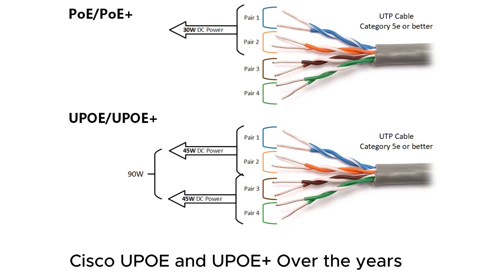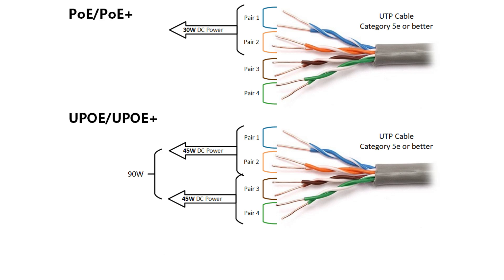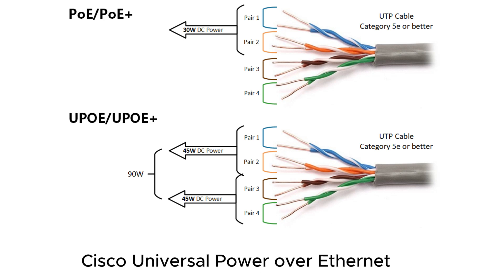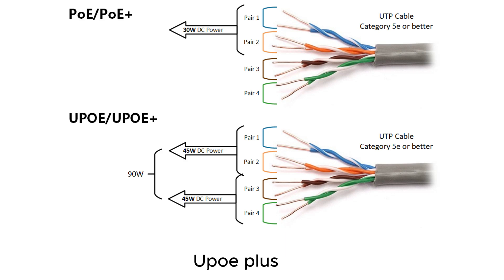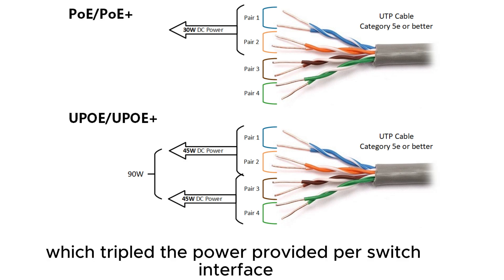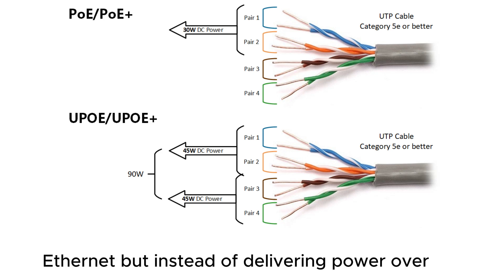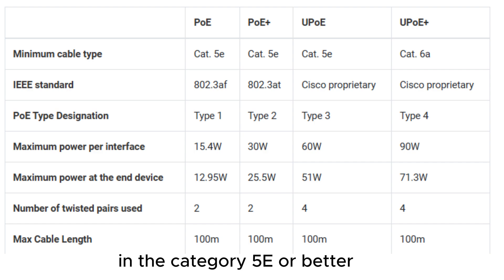Cisco UPoE and UPoE+: Over the years, IP networks have evolved and connected devices required greater power. To meet this demand, Cisco improved power over Ethernet technologies — Cisco Universal Power over Ethernet (UPoE) and Cisco Universal Power over Ethernet Plus (UPoE+) — which tripled the power provided per switch interface. It uses the same cabling standard as PoE, but instead of delivering power over two of the twisted pairs, it uses all four twisted pairs in the Category 5e or better cable.